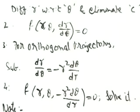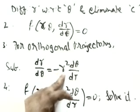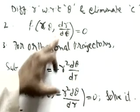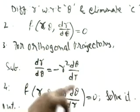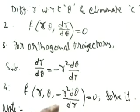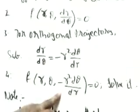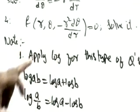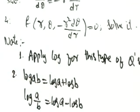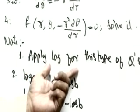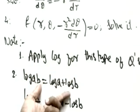So in place of dr/dθ we write minus r² dθ/dr. After this substitution, we solve the resulting equation using differential equation methods. One more tip: for polar coordinate questions, it becomes easier if we apply log first, because when we differentiate, the constant will automatically become zero — making it easy to eliminate the parameter.